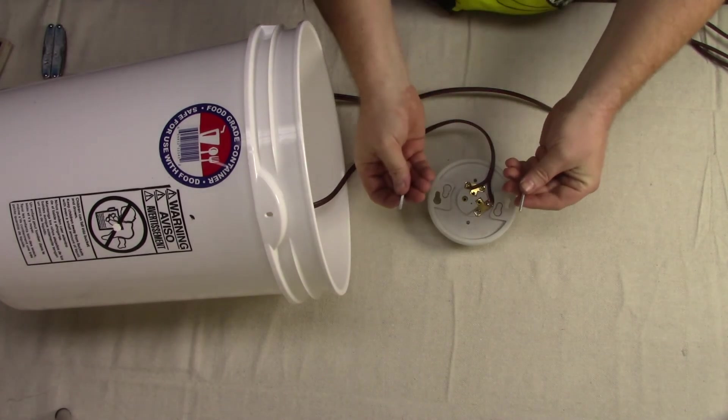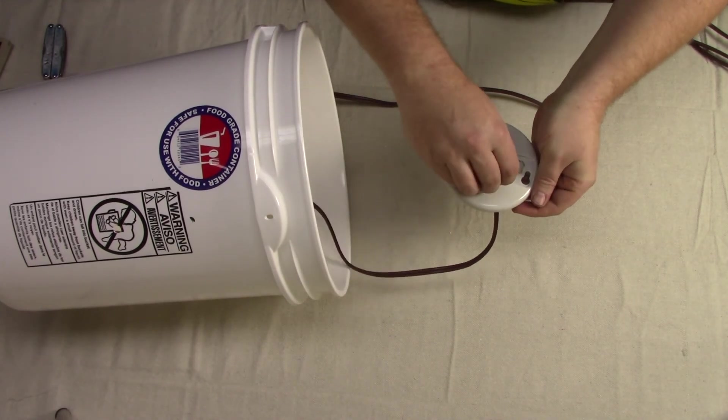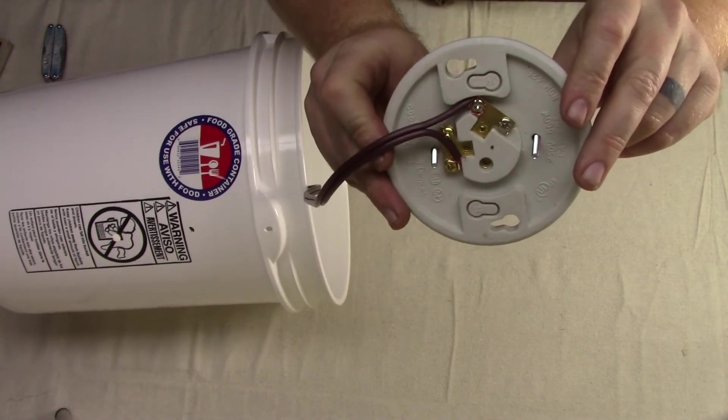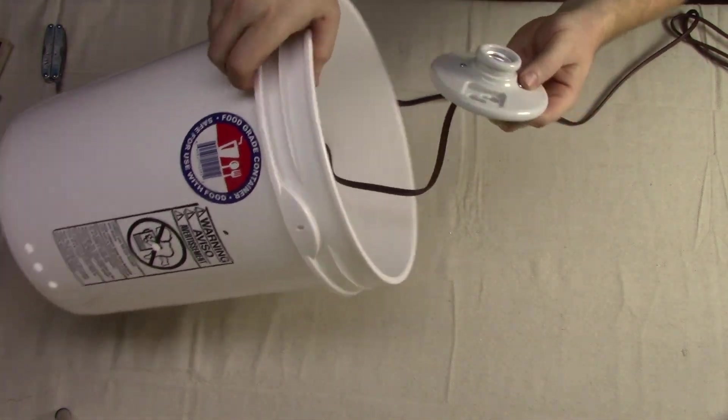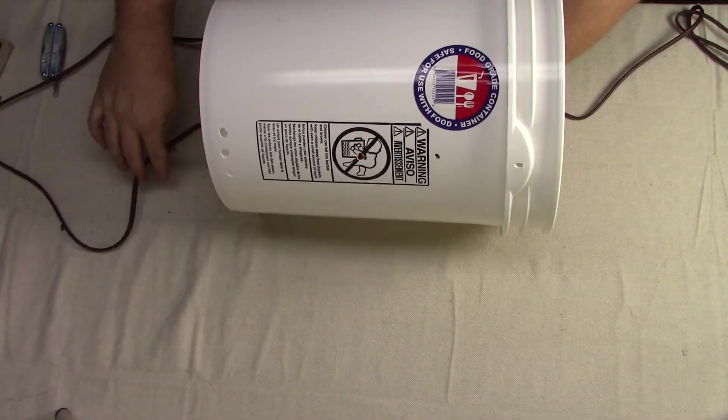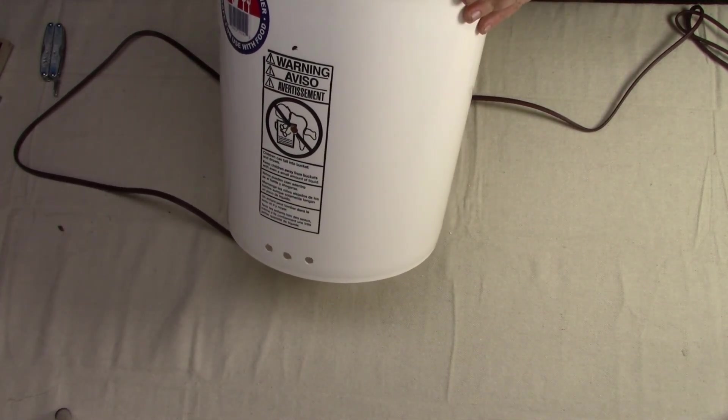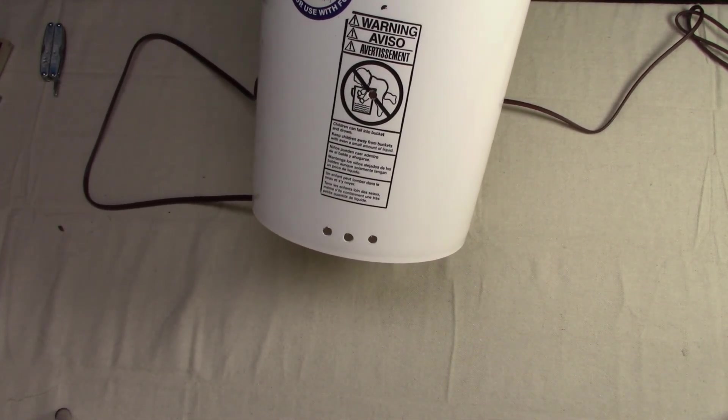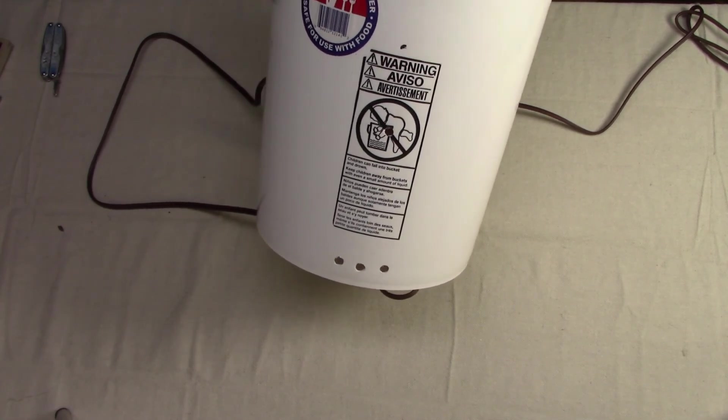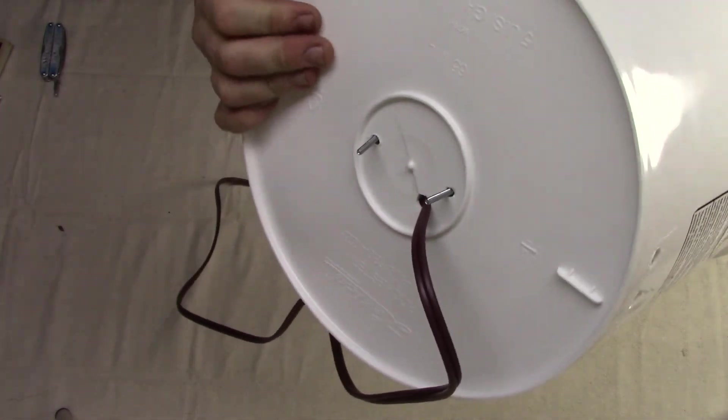Grab the two number 6-32 bolts and slide them into the holes on the front of the light fixture. Holding the bolts in place, slide the whole assembly into the bucket and slide the two bolts through the small holes in the bottom of the bucket. I was not able to show this very well due to the fact that I had to be able to look to see what I was doing, but I think you get the point.